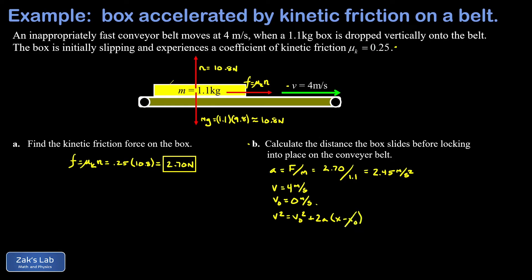We set the initial position to zero, so the final position is the sliding distance. With the acceleration, initial velocity, and final velocity, we can solve for the sliding distance. Since v₀ = 0, we solve for x.